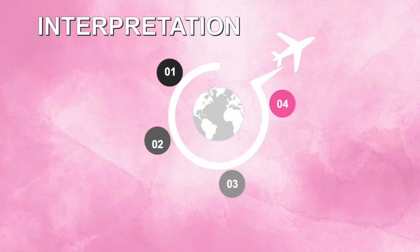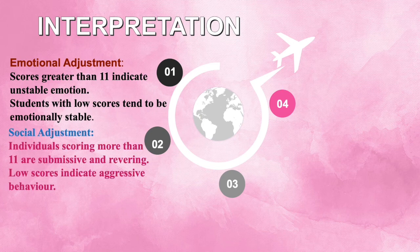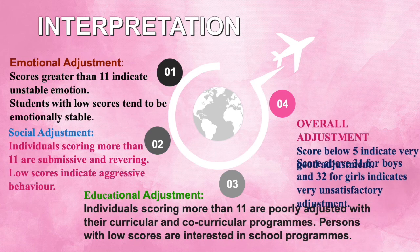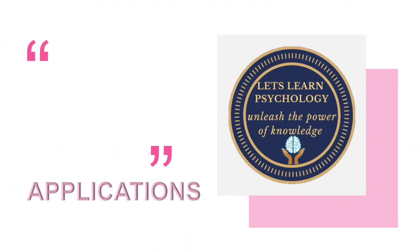In the emotional domain, those scoring greater than 11 have unstable emotions, while students with low scores tend to be emotionally stable. In social adjustment, individuals scoring more than 11 are submissive and reserved, while very low scores indicate aggressive behavior. In the educational domain, individuals scoring more than 11 are poorly adjusted with curricular and co-curricular programs, while very low scores indicate interest in school programs. Overall, a score below 5 indicates very good adjustment across all three domains, while a score above 31 for boys and 32 for girls indicates very unsatisfactory adjustment.